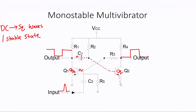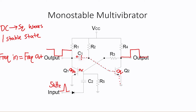Lastly, let's talk about frequency. Because this requires a positive input pulse and there's only one stable state, the frequency of the input will be equal to the frequency of the output. So if we have five kilohertz coming in, we will have a five kilohertz wave coming out.